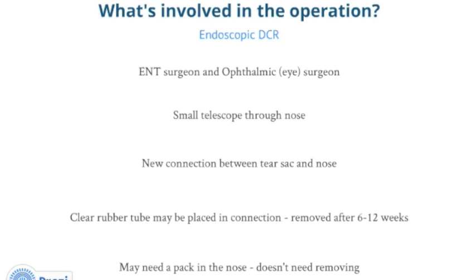Your ophthalmic or eye surgeon has referred you to have an endoscopic DCR. This is an operation done jointly by the ear, nose and throat (ENT) surgeon and the ophthalmic surgeon, carried out using a fine telescope through the nose. A new connection is made between the tear sac and the inside of the nose. A very fine clear rubber tube may be placed in the tear duct from the corner of the inner eye, with the ends emerging inside the nose, and is left in place for usually six to twelve weeks while healing takes place, then removed.